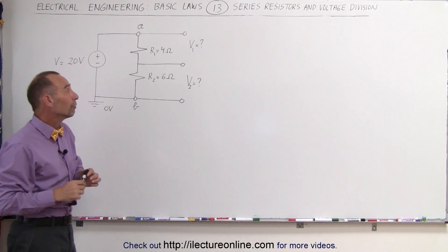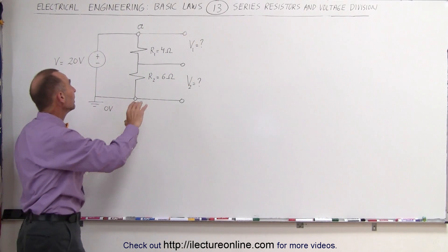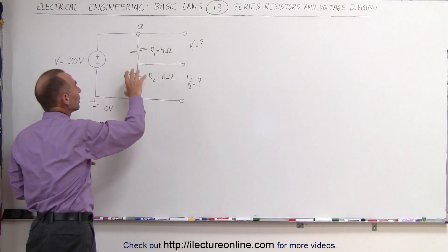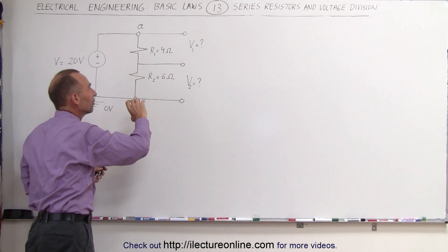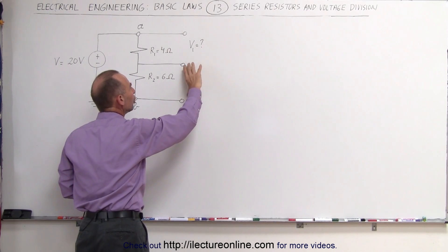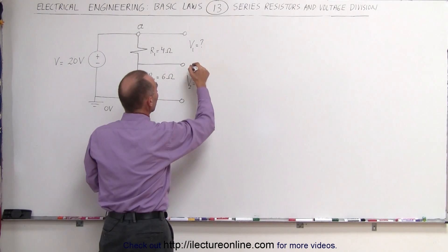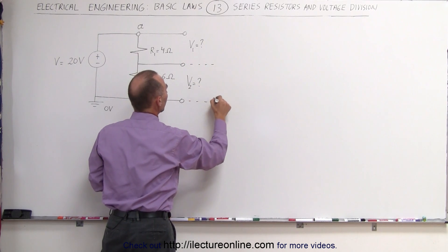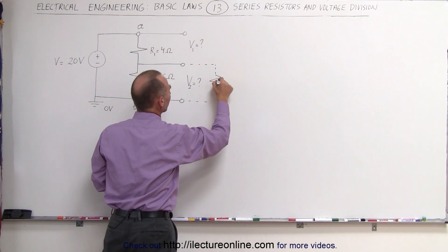The reason why we call this a voltage divider is because we can take a 20 volt source and with a combination of two resistors like this, determine or turn this into a lower voltage onto which we can actually put another load. For example, we can put a load resistor.